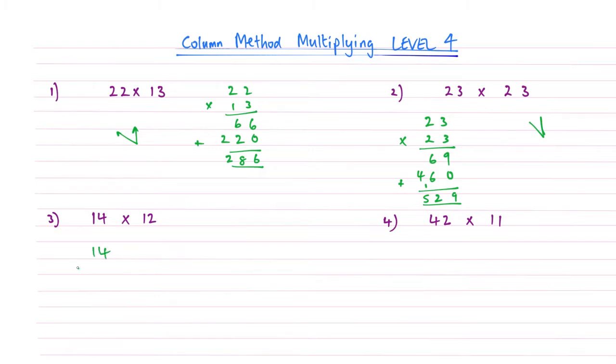Question 3, 14 times 12. So 2 times 4 is 8, 2 times 1 becomes 2, add your 0. 1 times 4 is 4, 1 times 1 is 1, and then we add these two together. So 8 add nothing is 8, 2 add 4 is 6, then we have a 1 left over there, which gives me an answer of 168.